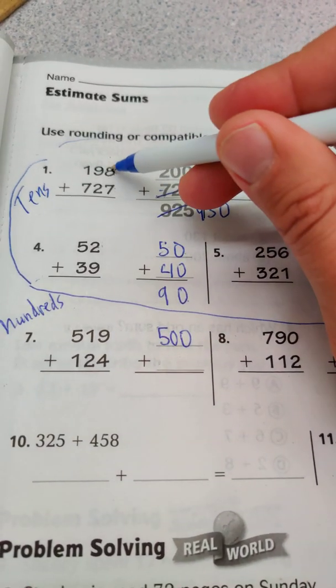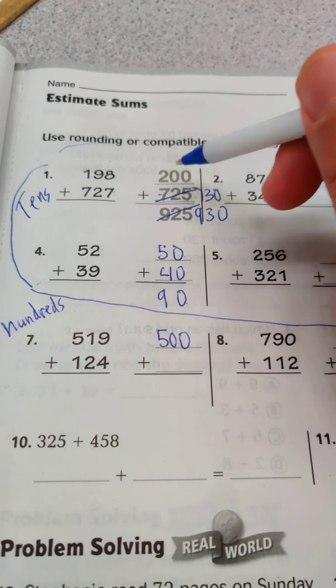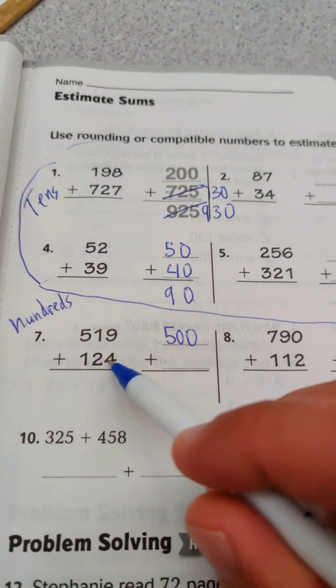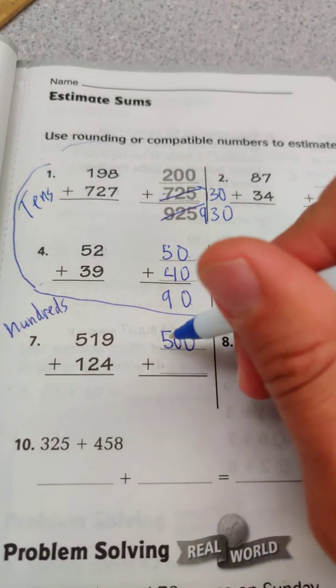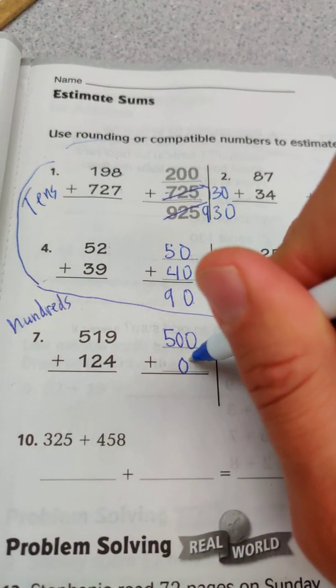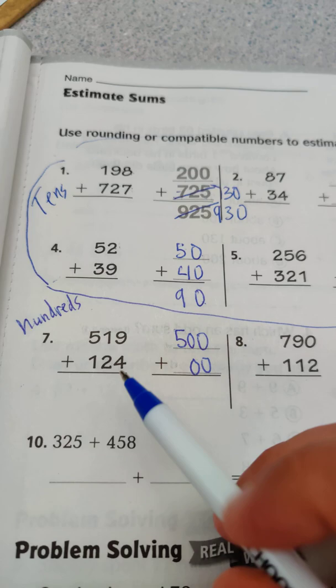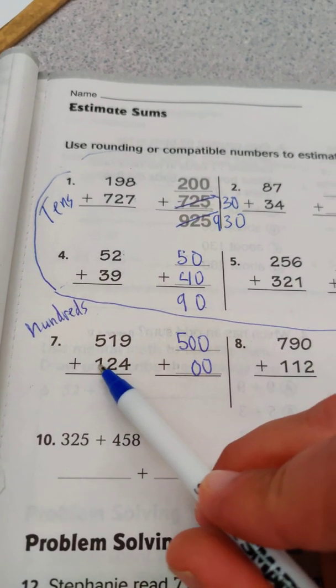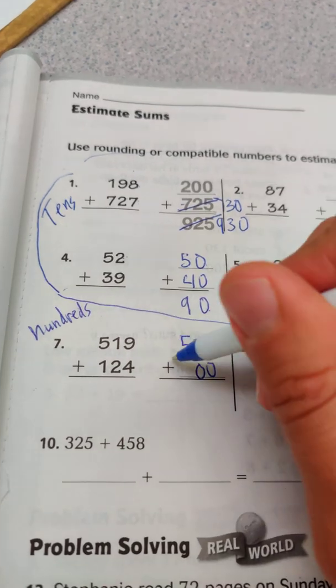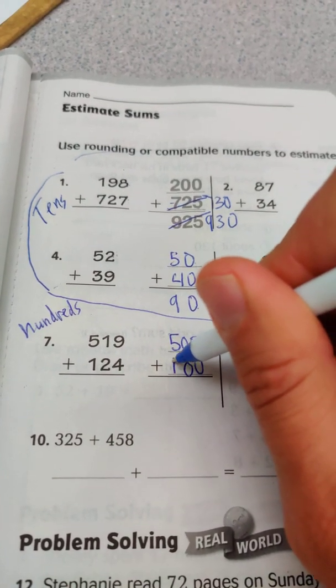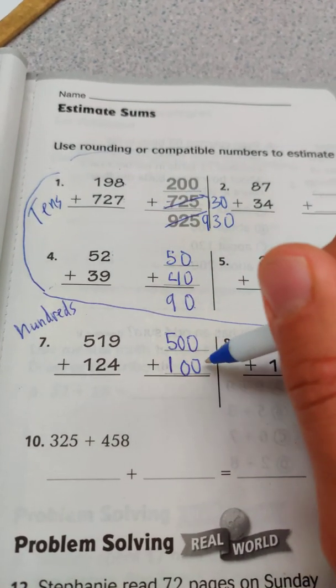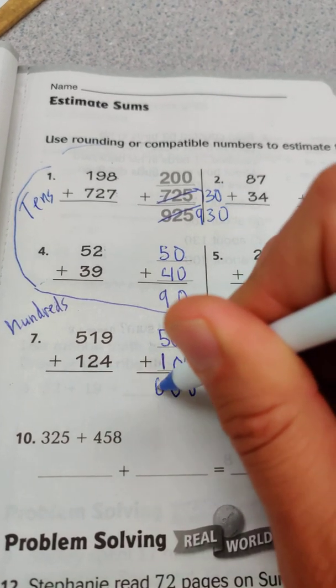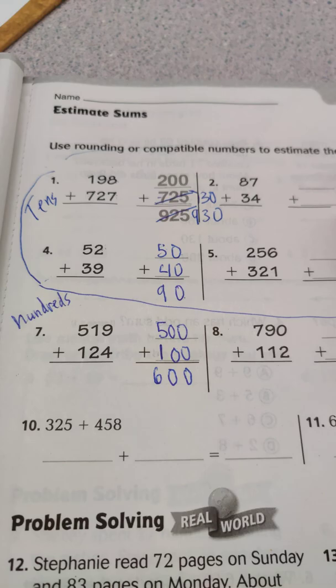Back to this problem: there will be two zeros because we're rounding to the nearest hundred. Looking at the tens, it's less than five, so the hundreds digit stays the same and the number rounds down to 100. So 500 plus 100 equals 600. That's how we add with rounding.